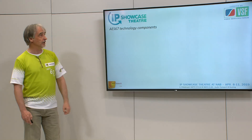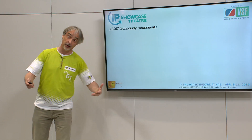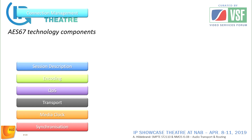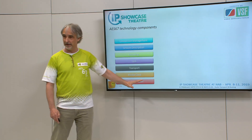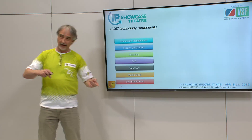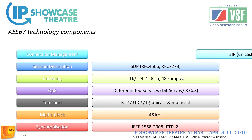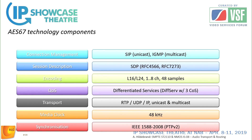In order to make that happen, several technology definitions need to be in place: synchronization, media clocking, transport, quality of service, encoding, session description, and connection management. AES 67 uses a very narrow specification on each of these blocks: PTP, 48 kHz, RTP for transport, differentiated services, L16 and L24 PCM with one to eight channels at 48 samples per packet. That 48 samples per packet combination is important and will come up again. We use SDP and IGMP for connection management.